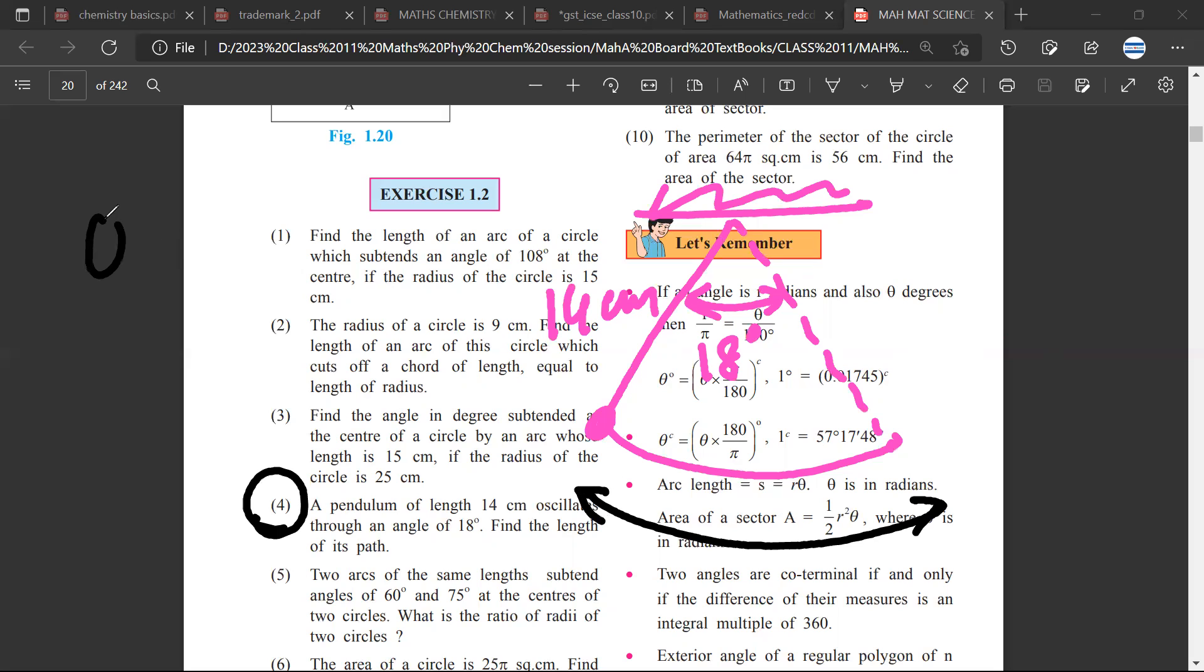We know theta is equal to l by r. We are intelligent enough to understand that theta is in radians. This formula doesn't work for degrees. 180 degrees equals pi radians, therefore 18 degrees would be equal to pi by 10 radians.